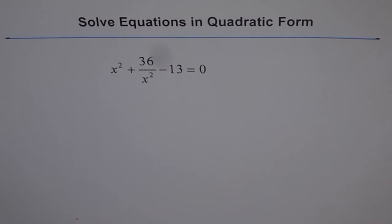Solve equations in quadratic form. x squared plus 36 over x squared minus 13 equals 0. This is kind of a quadratic form, but not really a quadratic equation. x squared is in the denominator, right?